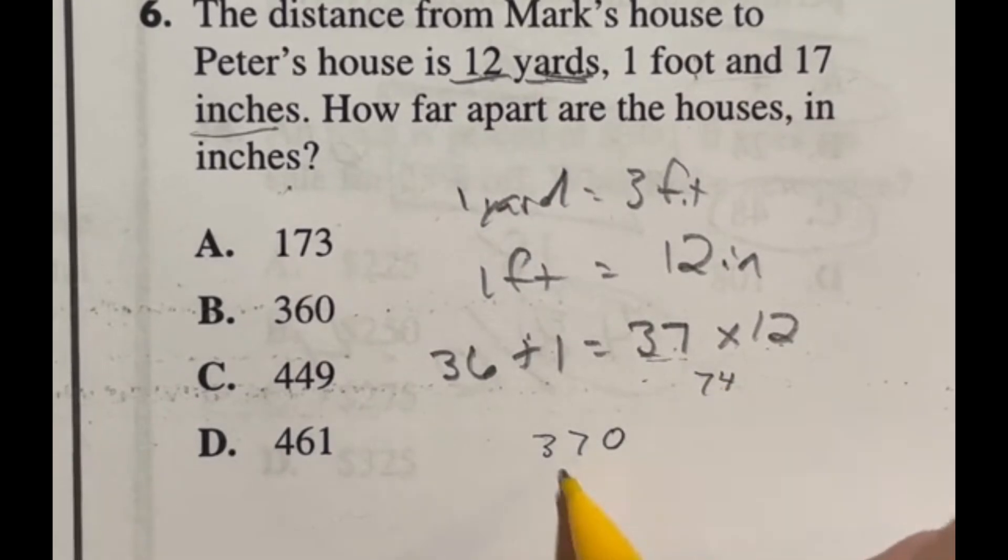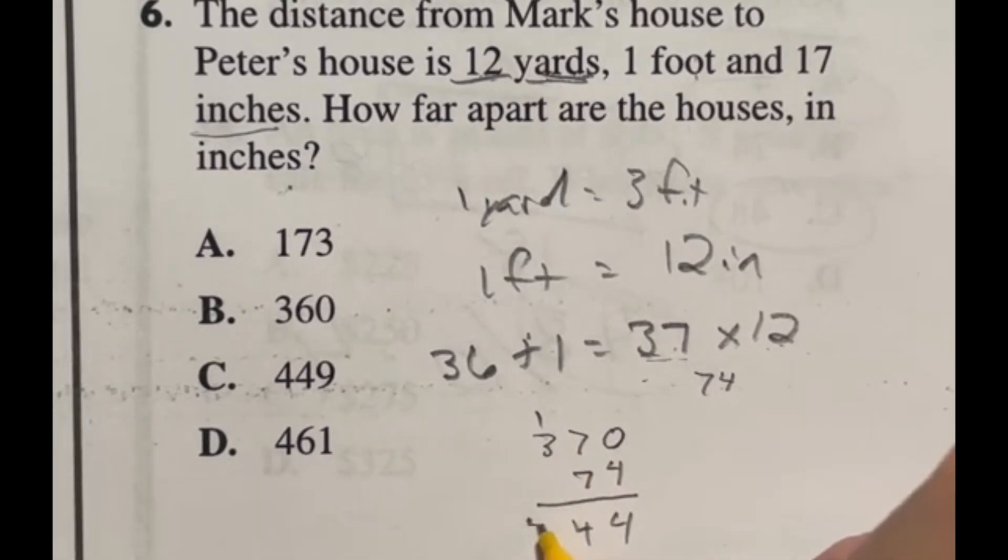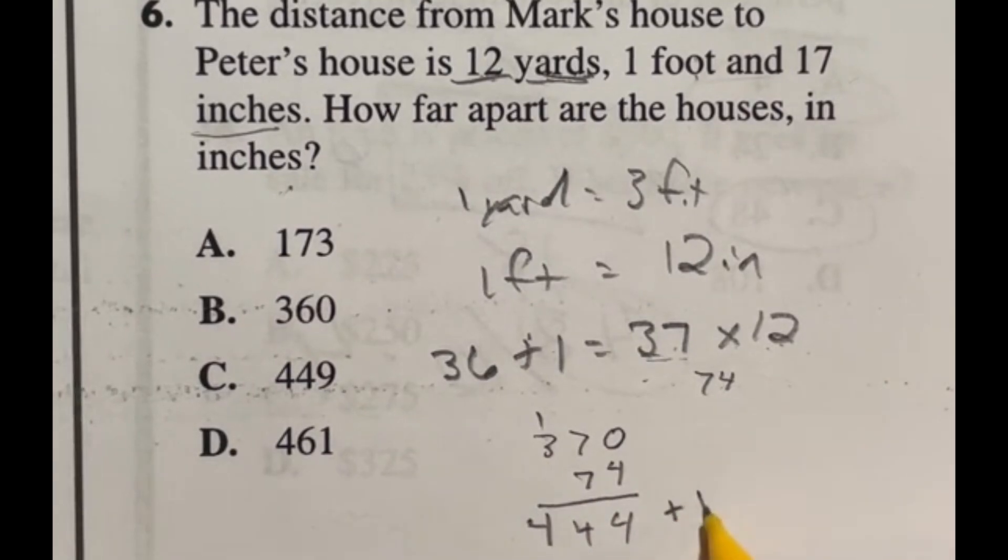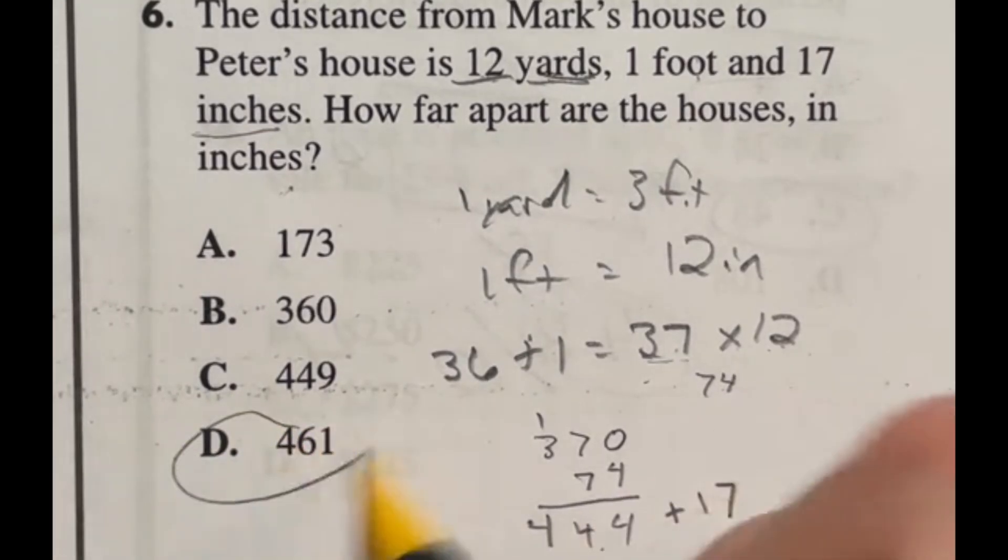So if we add 74 to this, that's going to give us a total of, there's a four, another four, carry the one, 444. And then we still have that 17 inches left. So we just add 17 to this, giving us a final answer of 461, which is answer D.